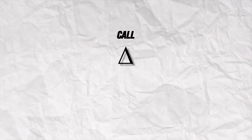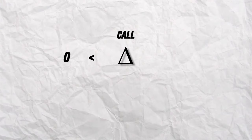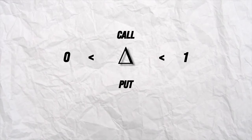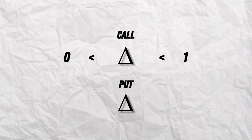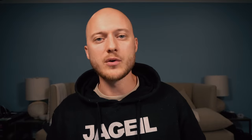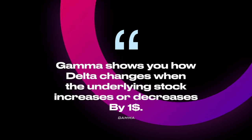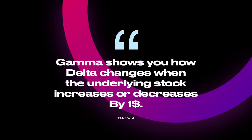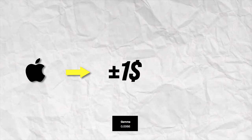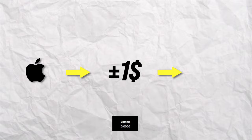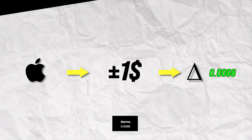For call options, delta has to be between 0 and 1. And for puts, delta has to be between minus 1 and 0. Moving on to Gamma — Gamma shows you how delta changes when the underlying stock increases or decreases by $1. If Apple's stock price increases or decreases by $1, my delta will change by 0.0066.